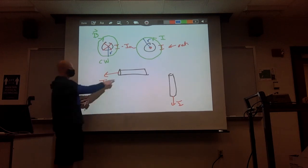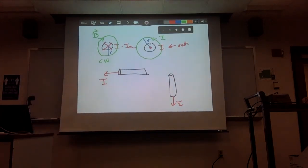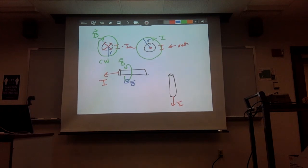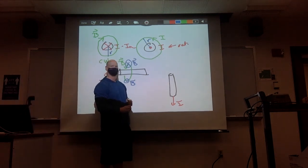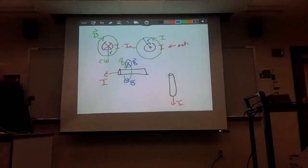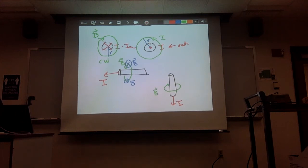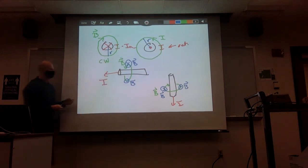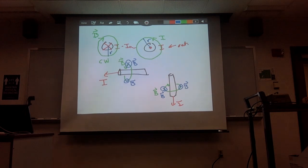For the out-of-board current, my magnetic field starts down here, comes around, so at this point it's running out, at this point it's going in. For the into-board current, on this side B is coming out, on the other side B is going in. Right-hand rule number one tells me the direction of the magnetic field around the current-carrying wire.